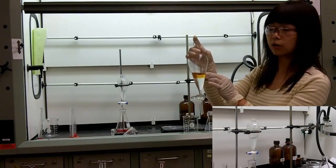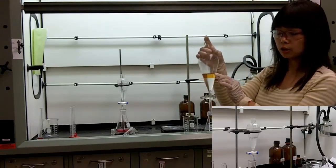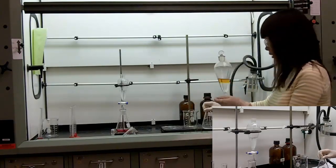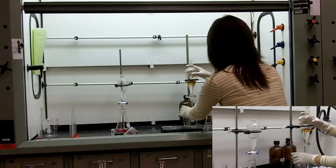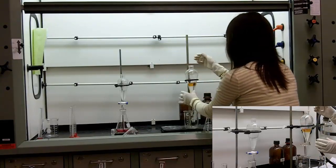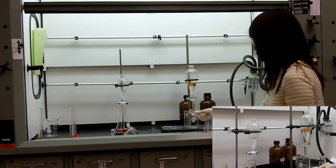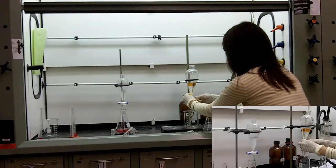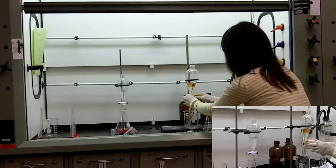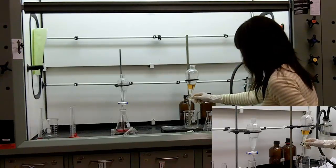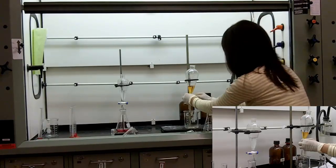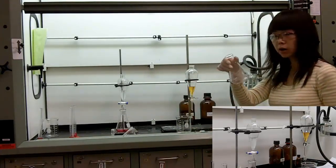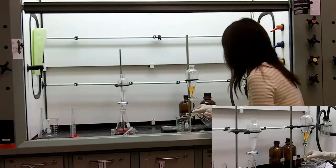In this separatory funnel, it's the same aqueous solution but with diethyl ether as the organic layer. Following the color, you can see your compound now is in the top layer, which is the organic layer. To do this separation, you need to have a beaker and a clean Erlenmeyer flask. After you mix the two layers thoroughly, remove the stopper and drain the aqueous layer first, which is the bottom layer. Now drain the organic layer and collect it in a dry, clean Erlenmeyer flask.